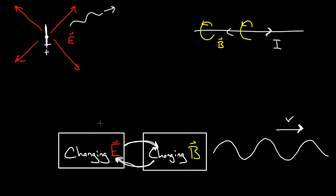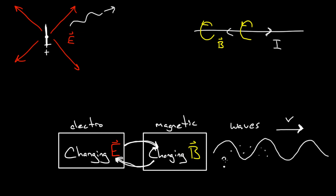We call these electromagnetic waves — 'electro' because they have electric fields, 'magnetic' because they have magnetic fields, and 'waves' because they propagate outward according to wave equations, similar to all the other waves we've seen. There is one difference: these waves don't actually need a medium. They can travel through a complete vacuum. You don't need actual particles of some material — these can move through the vacuum, which is a little weird because the only thing that's oscillating is the value of the electric and magnetic fields.